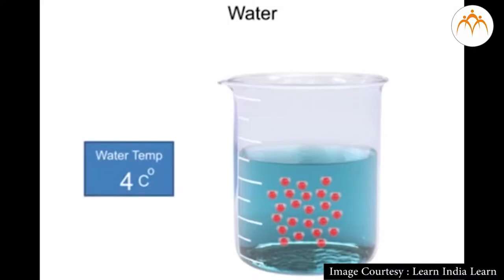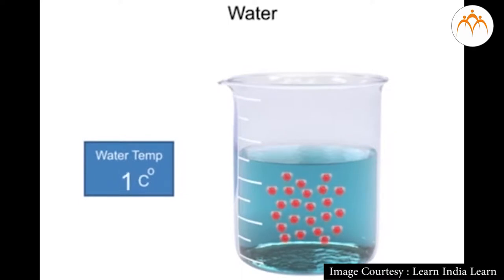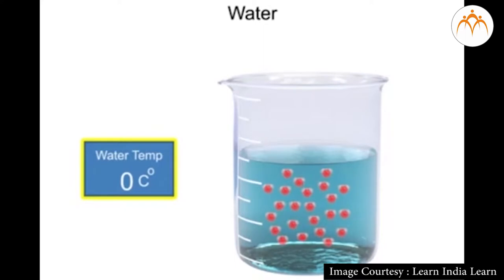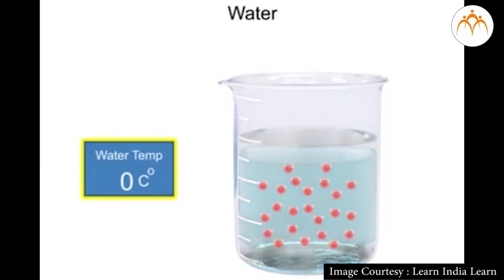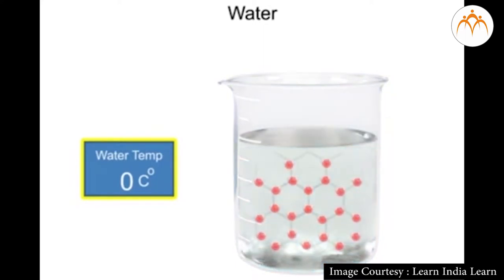When water at normal temperature starts cooling, its density increases like that of most liquids. When the temperature of water falls below 4 degrees Celsius, its density starts decreasing and volume starts increasing. So instead of contracting, water expands when temperature falls below 4 degrees Celsius. This abnormal behaviour of water of expanding when cold below 4 degrees Celsius is called anomalous behaviour of water.